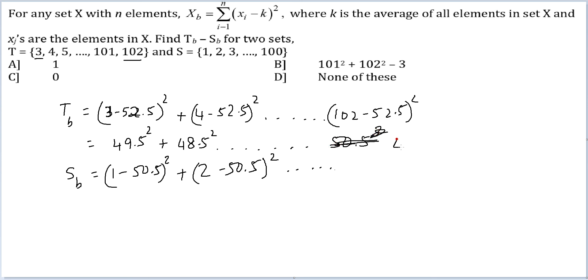It will not be 50.5, it will be 49.5 whole square. Here the last term will be 100 minus 50.5 whole square.